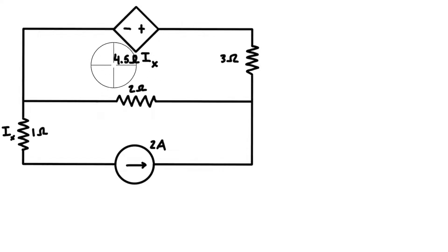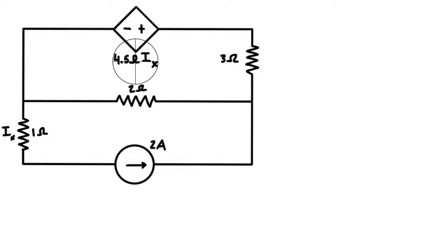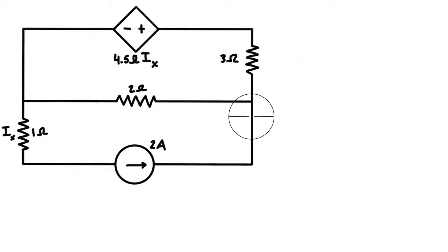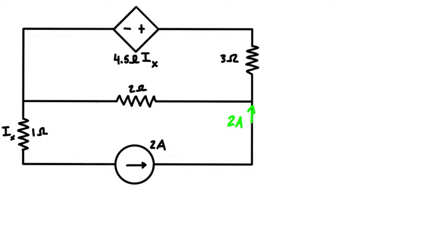Don't be alarmed when you see something like this — it's not too bad. The units of ohms just need to be there for the calculation to make sense. The independent current source is two amps, so it forces two amps through that branch no matter what. At the junction we have two amps flowing in and two amps coming out, which means ix equals two amps.